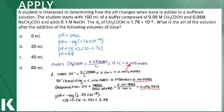I can figure out the pOH by taking the negative log of the hydroxide concentration: pOH = −log(6.25 × 10⁻³) = 2.38. Since pH = 14 − pOH, I get a final pH of 11.62. Since I neutralized all of the acid in the buffered solution, I now have a very drastic change in my pH.